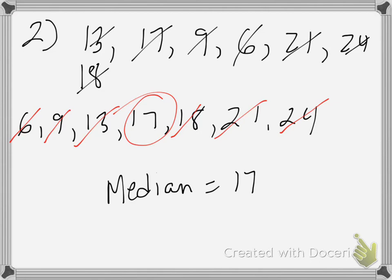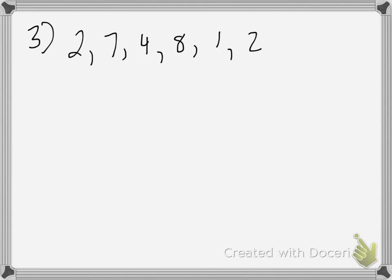Our next data set is going to have an even number of items, and you'll see something a little different that we have to do. Here's the data set: 2, 7, 4, 8, 1, and 2. Just like before, we'll begin by rewriting these numbers in order, crossing them off as I go.